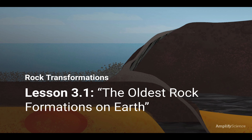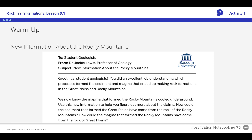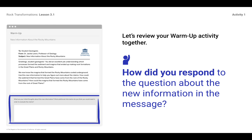The warm-up today — we've got some new information. We get this email from Dr. Jackie Lewis. Remember, she's the professor that looked at the two rock samples: one the Rocky Mountain sample from the boy, and the sample of the Great Plains rock from the girl. She's telling us that we have new information — we now know that the magma that formed the Rocky Mountains cooled underground. So this is not volcanic rock that formed when lava cooled above ground; it actually formed underground.